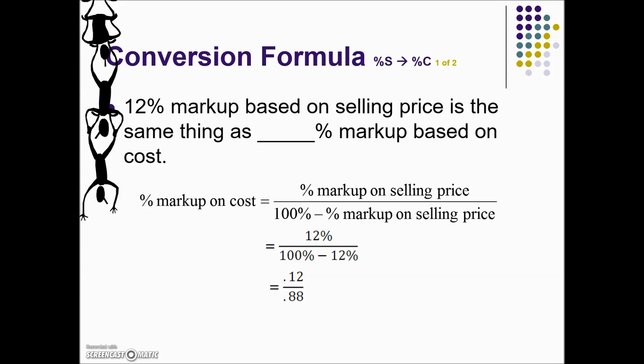Also, these are being converted from percents to an equivalent decimal. Taking the numerator 0.12 divided by the denominator 0.88 gives us the following decimal. Converting this decimal into an equivalent percent, we move our decimal two places to the right — so we would answer this question with 13.6%.